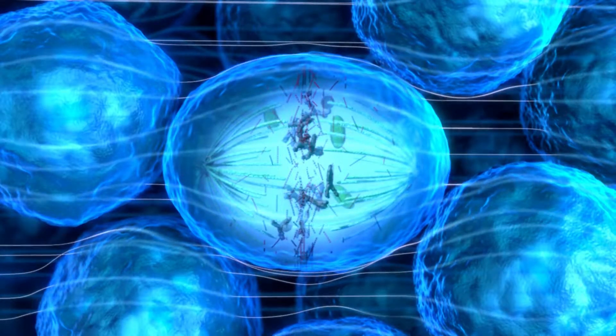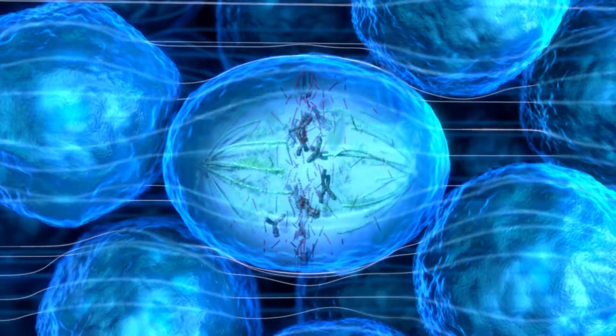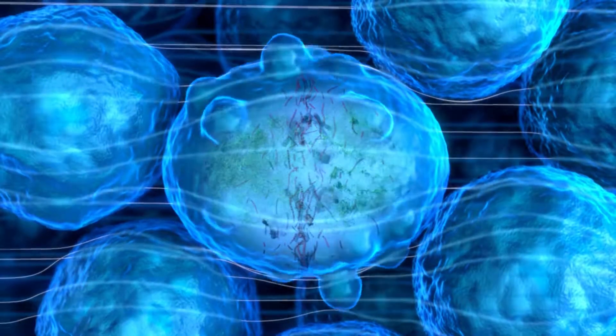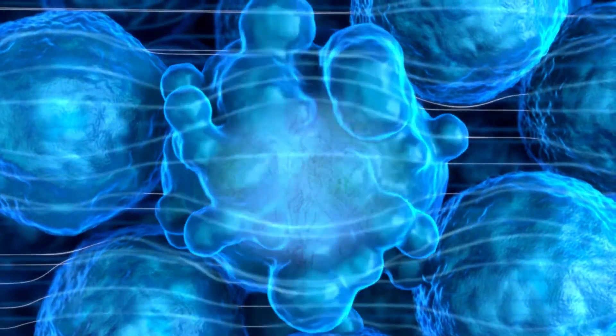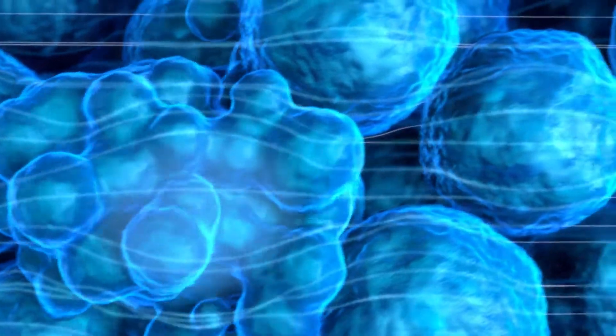Disruption of the spindle structure and mislocalization of the contractile apparatus lead to membrane blebbing during anaphase, prolonged mitosis, and mitotic cell death.